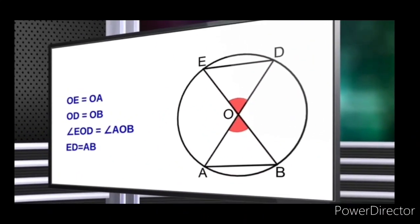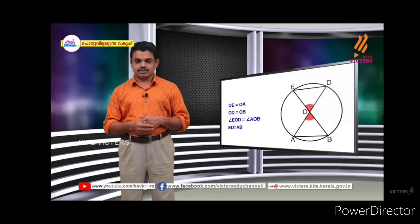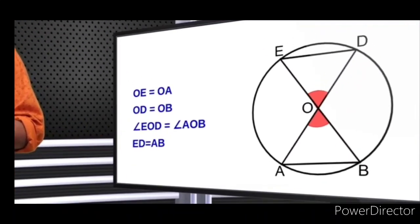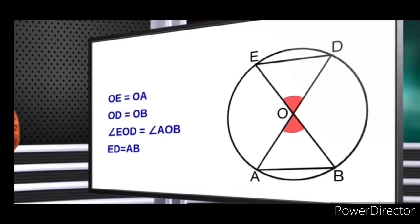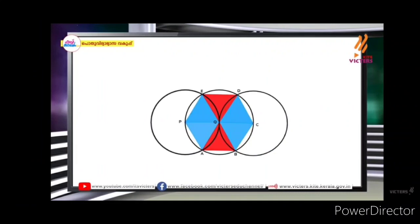In the center, you can change O and Q. OE is equal to OA. OD is equal to OB. Angle EOD is equal to angle AOB because they are opposite angles. Therefore ED is equal to AB.